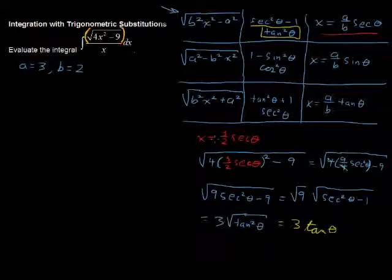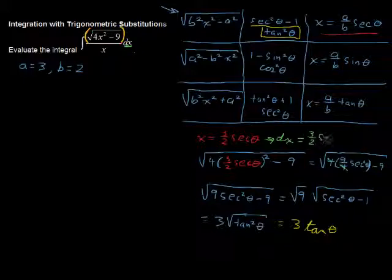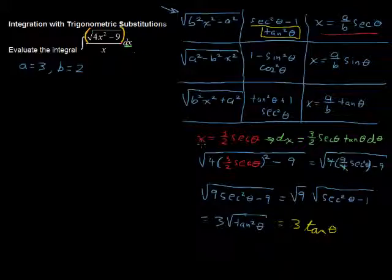There are a few more things to clean up. Since x equals 3 over 2 secant of theta, dx equals 3 over 2 secant theta tangent theta dθ — just the derivative of 3 halves secant theta. So we've got something to replace dx with, and something to replace x with.